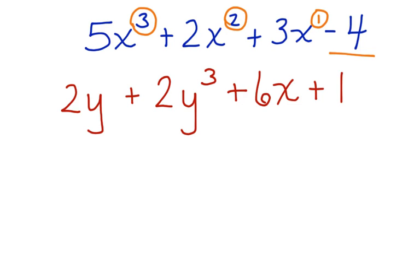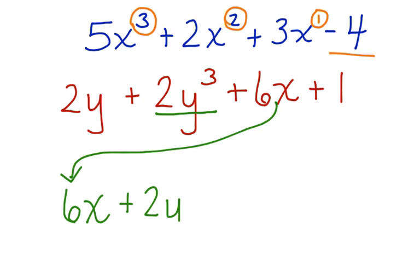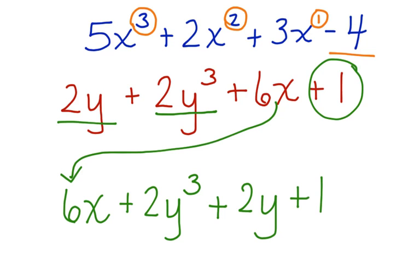Now look at this polynomial: 2y plus 2y cubed plus 6x plus 1. Can you rearrange this one so that it's in order? Well, first, we're going to put the x's before the y. So we're going to start off with 6x. Our next largest value is 2y cubed, so plus 2y cubed. Then we have 2y plus 2y. And finally, we put the constant in, plus 1.